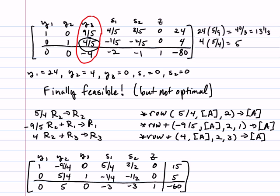Y sub 1 is a positive 15, Y sub 2 is 0, Y sub 3 is 5, S sub 1 and S sub 2 are 0. The problem is we're still not optimal, so we want to perform another pivot operation.